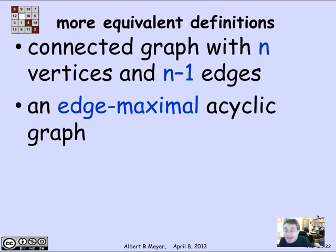So typically, an acyclic graph might not be connected, but as long as it's not connected, you can keep adding edges that will connect things up without creating cycles. But the minute you get a tree so that everything's connected, you can't add another edge.